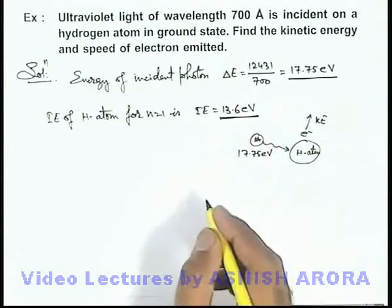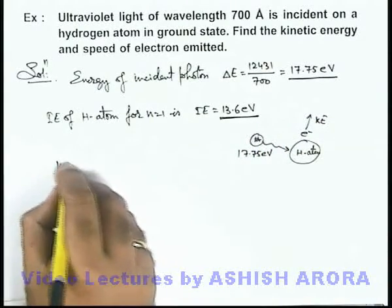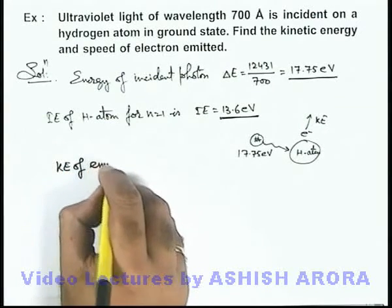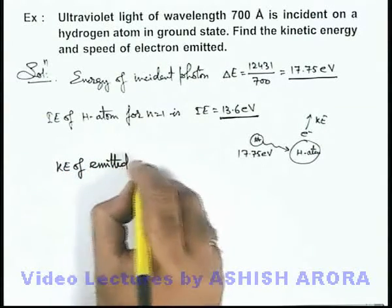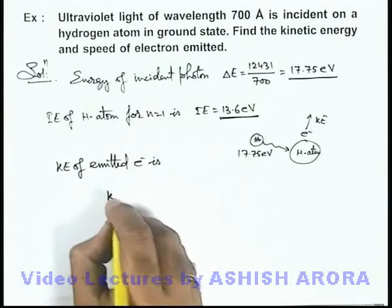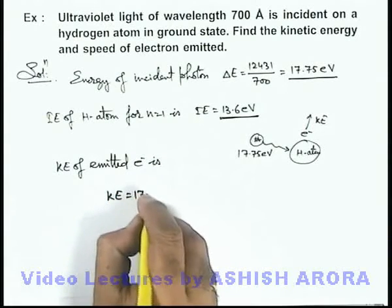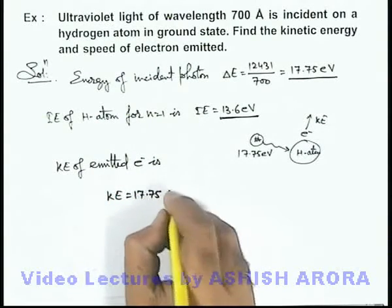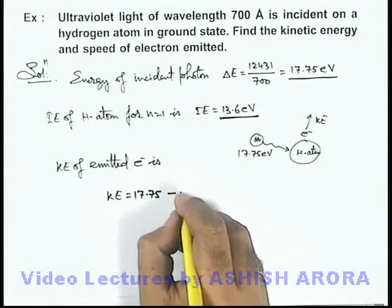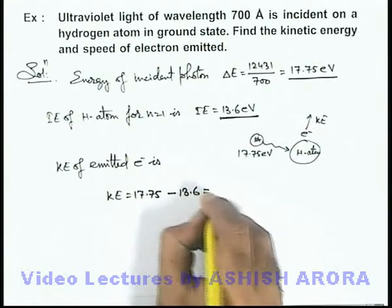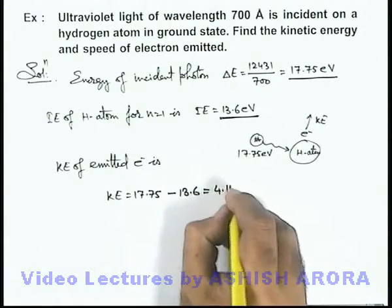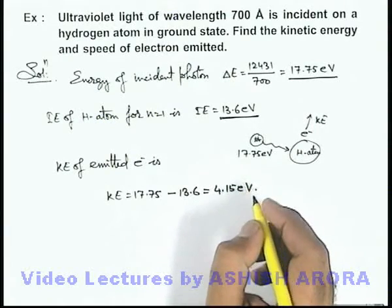That means an electron is ejected out, and as some extra energy is supplied, it will have some kinetic energy. And we can directly write kinetic energy of emitted electron is, this can be given as 17.75 minus 13.6, which is equal to 4.15 electron volts.